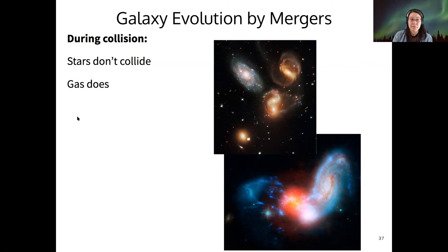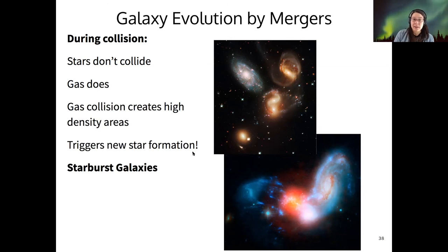And when they collide, the gas collides. And when the gas collides, it creates higher density areas, and this triggers new bouts of star formation. So galaxies where new star formation is occurring because of a collision or a merger in progress, those are called starburst galaxies. And I wonder if the candy got that name from there. It would be cool if that were true, but I don't actually know.